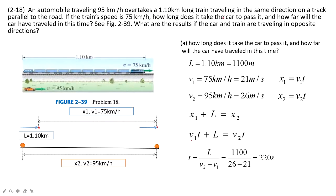So we answer the first question: how long does it take the car to pass? 220 seconds. The second question asks how far will the car have traveled in this time. So how far the car has traveled asks us about x2. x2 is v2 times t. So we put it inside, then we find the answer is 5,720 m. Easy.